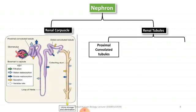As shown in the diagram, the proximal convoluted tubule (PCT) is positioned near the renal corpuscle — it is very close to it. This is the point where filtration and reabsorption takes place. It is the first and largest part of the nephron's tubular system.